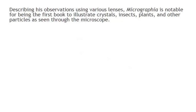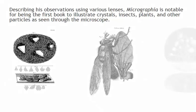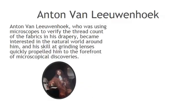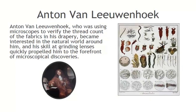Describing his observations using various lenses, Micrographia is notable for being the first book to illustrate crystals, insects, plants, and other particles as seen through the microscope. Anton von Leeuwenhoek, who was using microscopes to verify the thread count of the fabrics in his drapery, became interested in the natural world around him, and his skill at grinding lenses quickly propelled him to the forefront of microscopical discoveries.